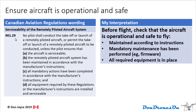The next regulation is 901.29. Before flight, check that the aircraft is operational and safe to fly — makes sense. Make sure it is maintained according to instructions. Check over things like batteries — make sure they're not swelling or any other issues like that are happening. Ensure that any mandatory maintenance has been performed, for example, firmware is up to date. And ensure that all required equipment is in place.